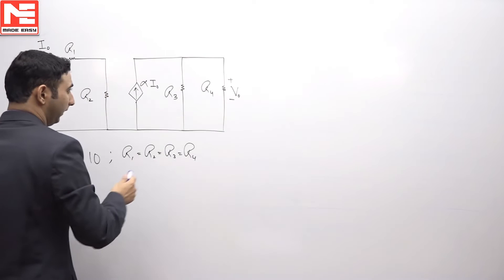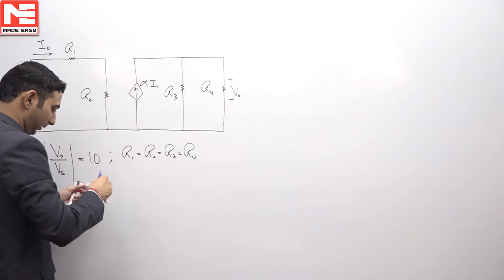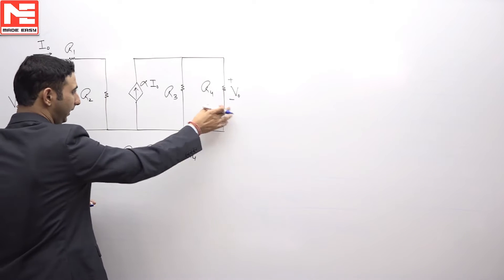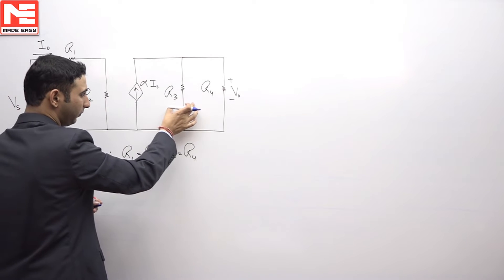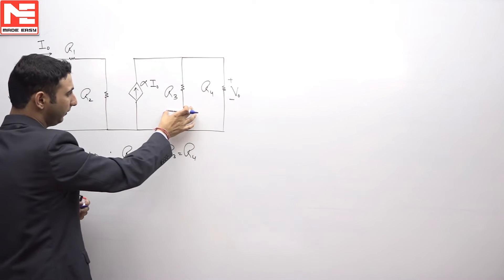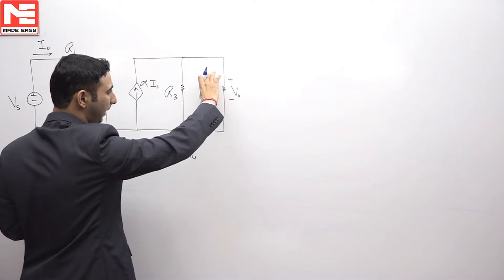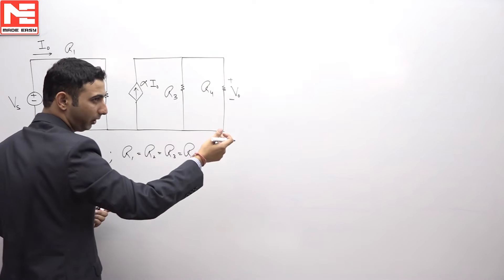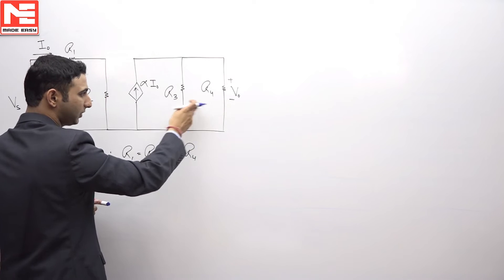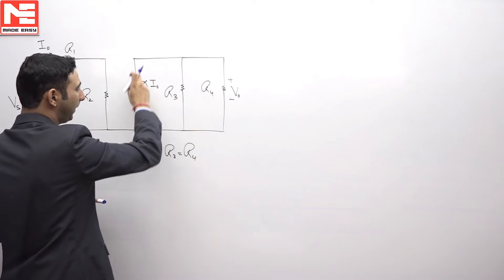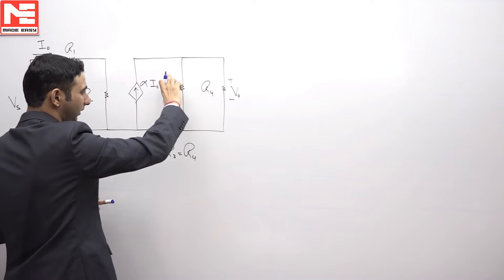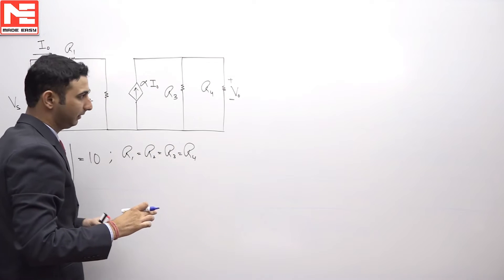You see this V naught is over here. This V naught will be this alpha I naught, it will be dividing into these two branches. We can find V naught in two ways. Either we can first calculate the current flowing in this branch, then multiplied by R4 will give me the V output, or you can calculate the equivalent resistance of these two branches and then multiplying by this current, you will get the answer because these branches are connected in parallel.